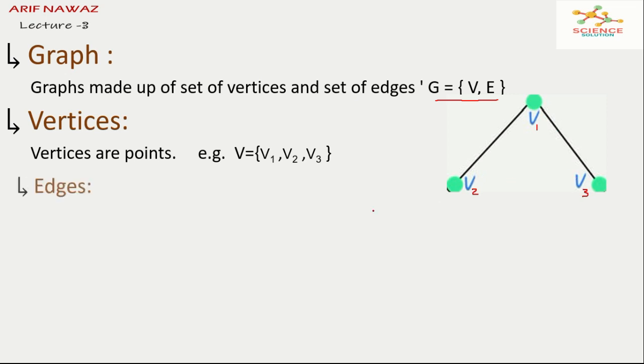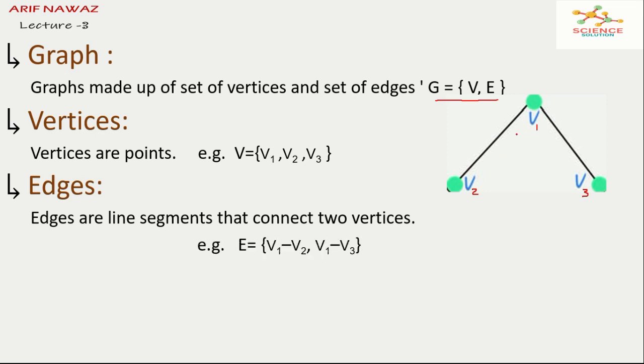And what are edges? Actually edges are line segments that connect two vertices. In this given graph we see there are only two edges or two lines. We see a line joins V1 to V2 and another line V3. So in this graph only two lines are present. So this graph has two edges and three vertices.